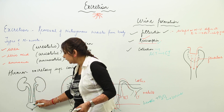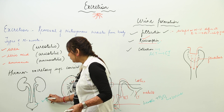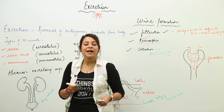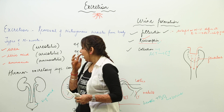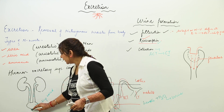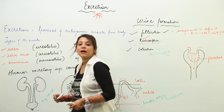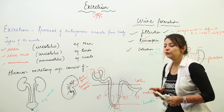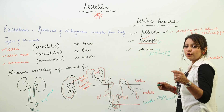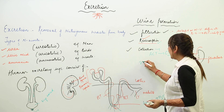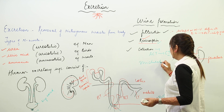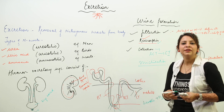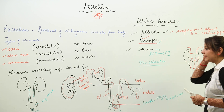From the ureter, the urine is carried into the urinary bladder where it is temporarily stored — the bladder is a sac where urine is temporarily stored. Then through the urethra it is excreted out. The process of passing urine is called micturation.